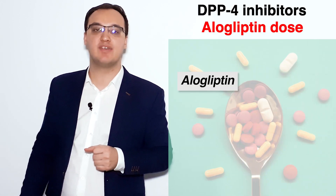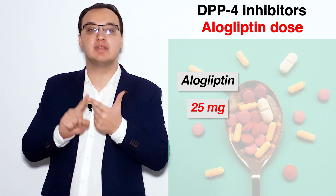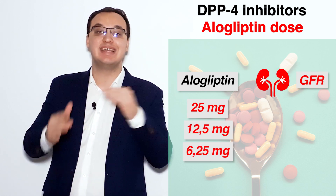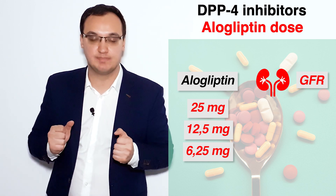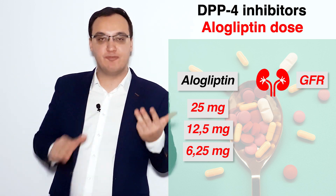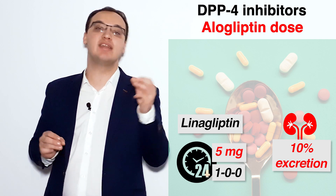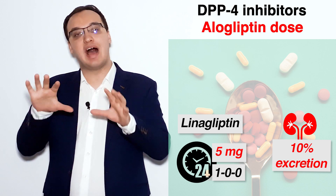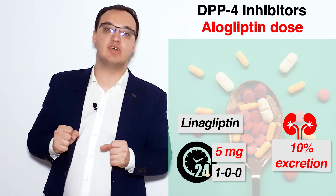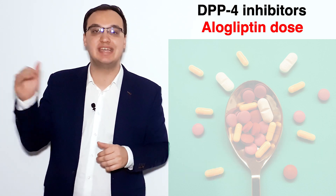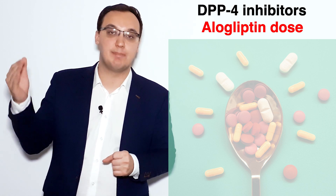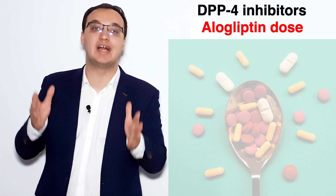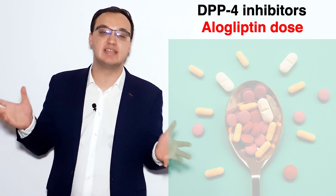The available doses of alogliptin are 25 mg, 12.5 mg, and 6.25 mg, depending on the level of kidney insufficiency. As we know, linagliptin is the one DPP4 inhibitor that does not require dose adjustment. For others, if the GFR is above 60 mL/min, we use 25 mg once daily in the morning.